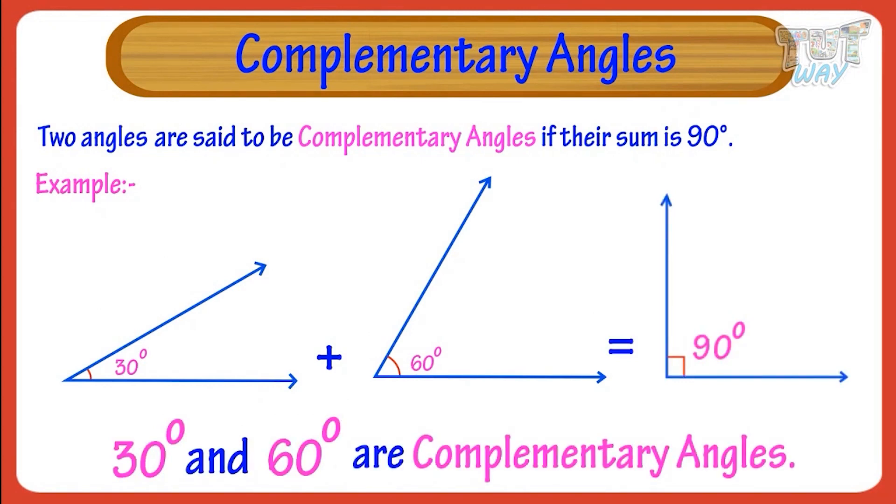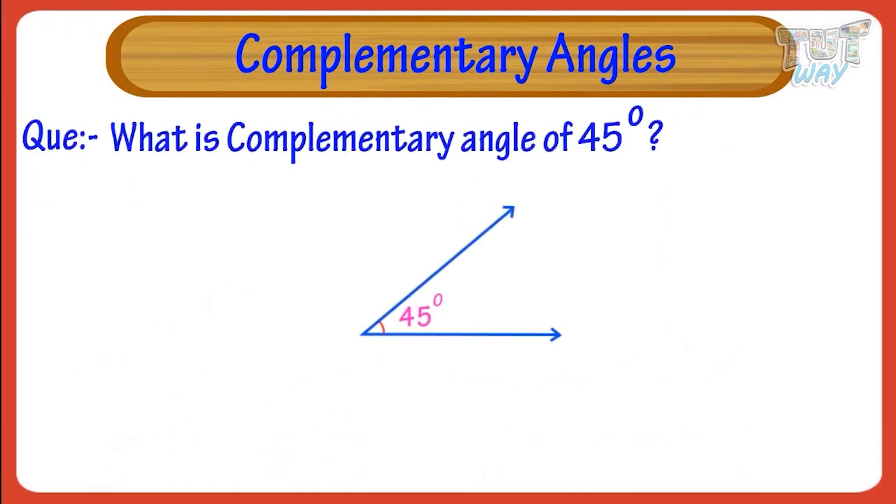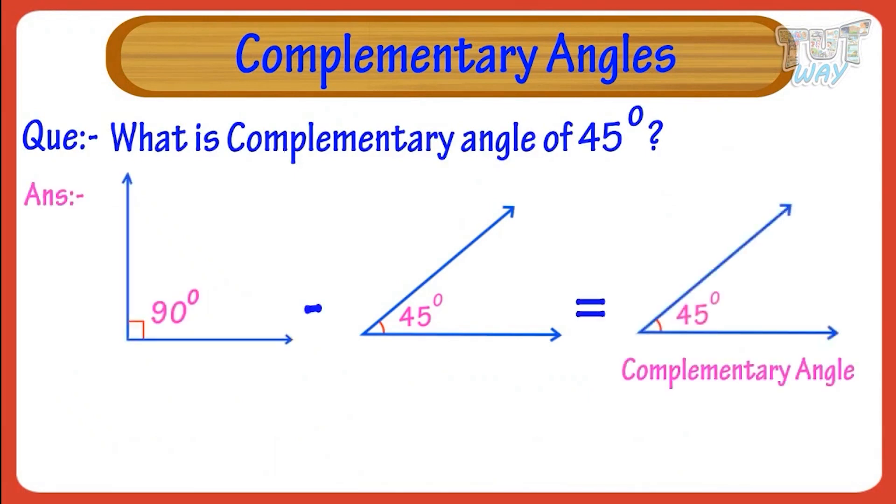If we have one angle and we are asked to find its complementary angle, we subtract it from 90 degrees to get its complementary angle.